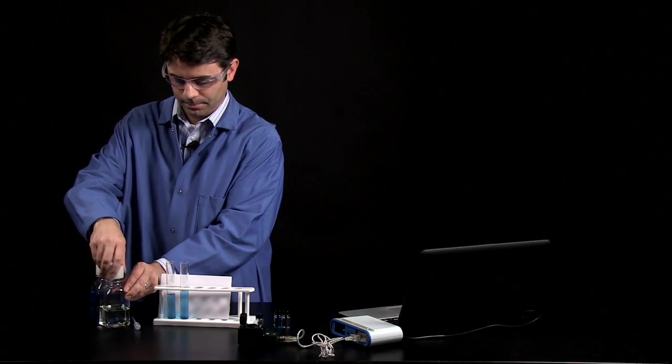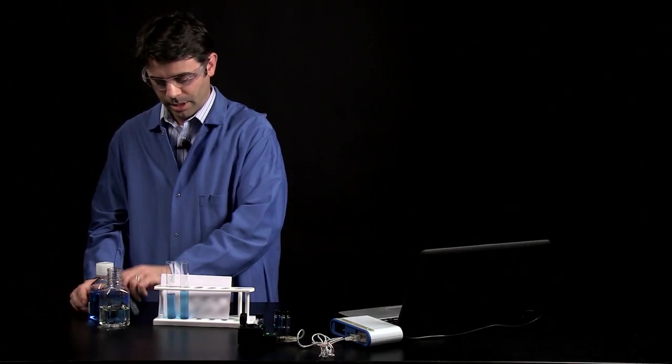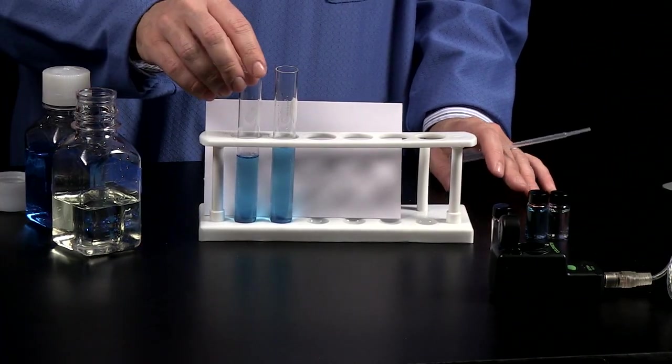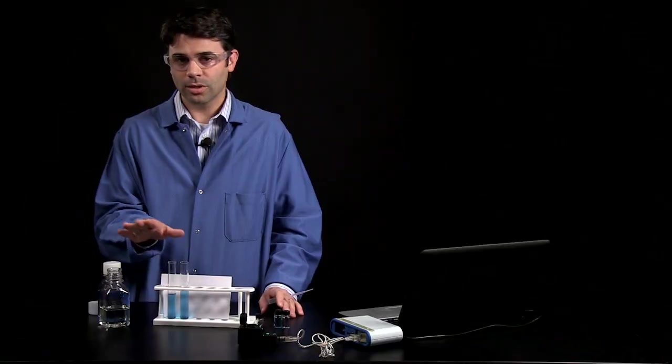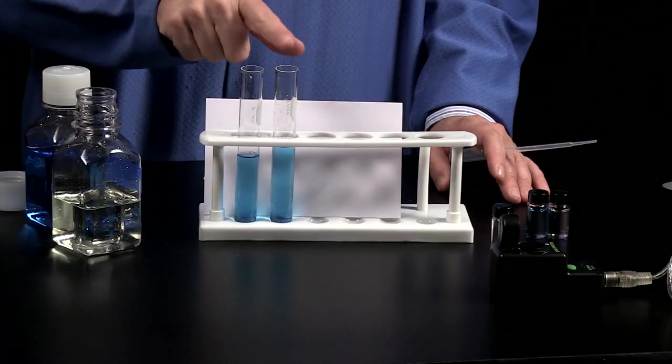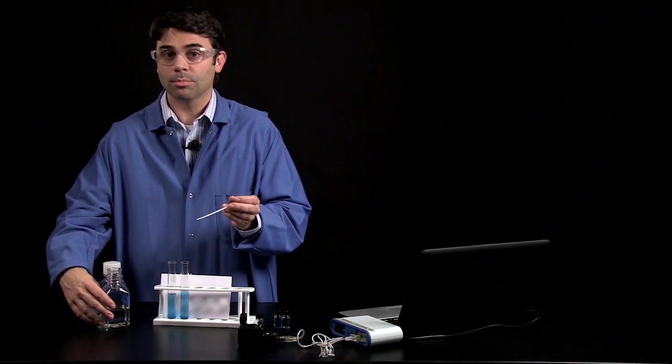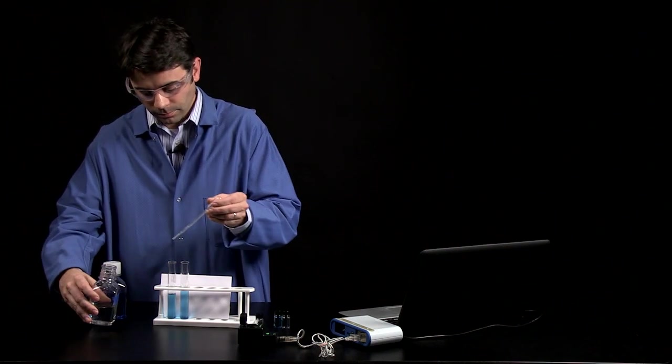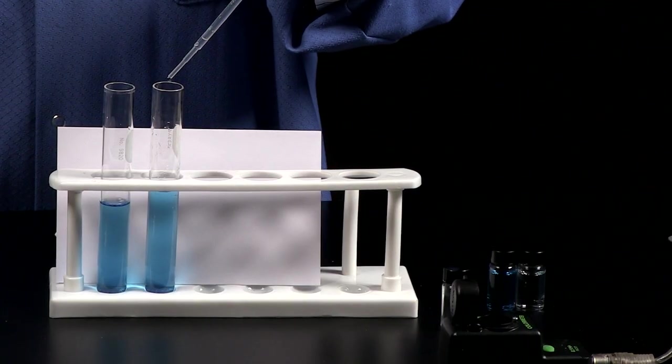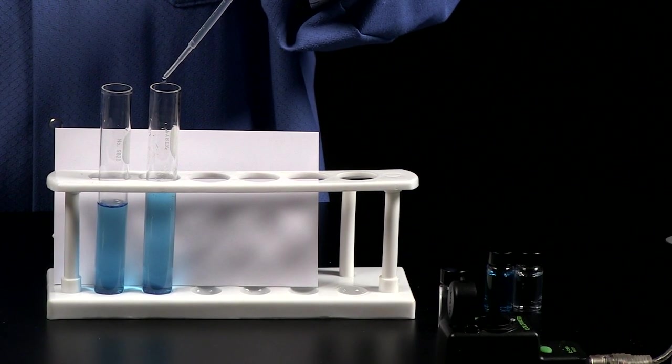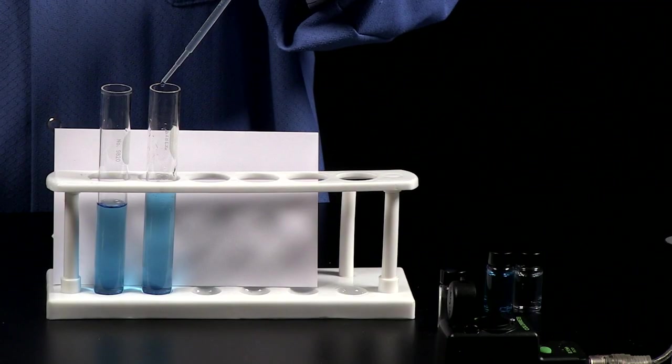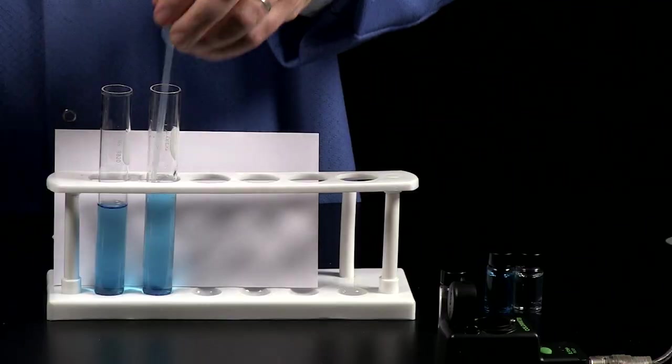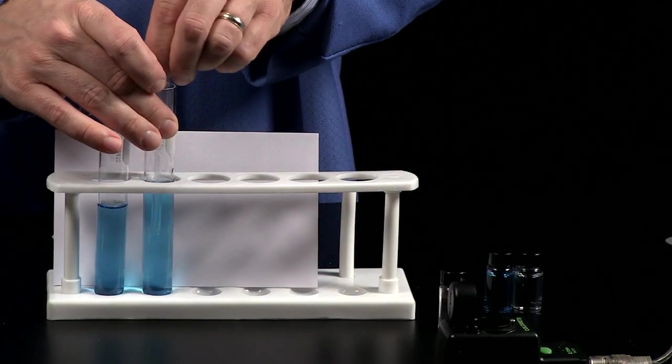I'm going to take some bleach and add it to one of these test tubes. These two test tubes both have the blue solution in it. I'm going to leave one alone so that I can see it as the standard, and I'll have one with the bleach in it so I can monitor the reaction. I put about 10 drops in and mix that up, make sure it's nice and mixed.